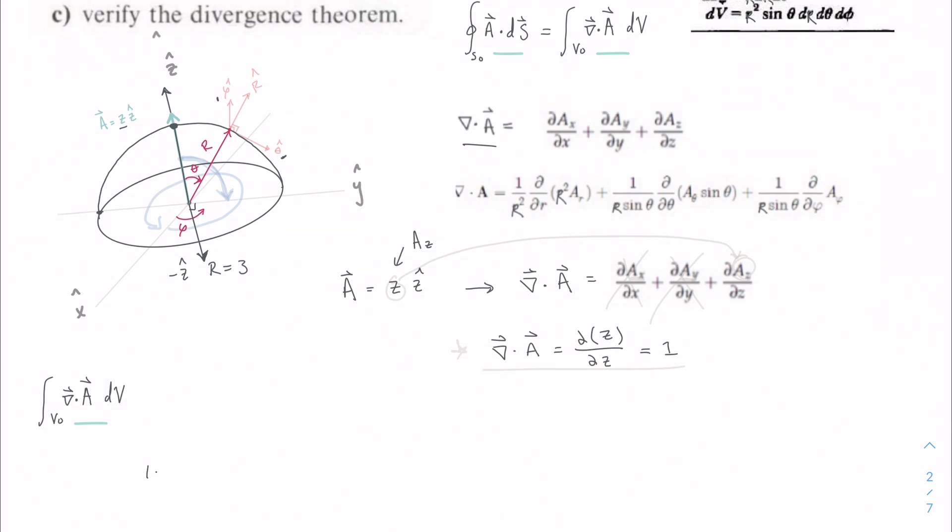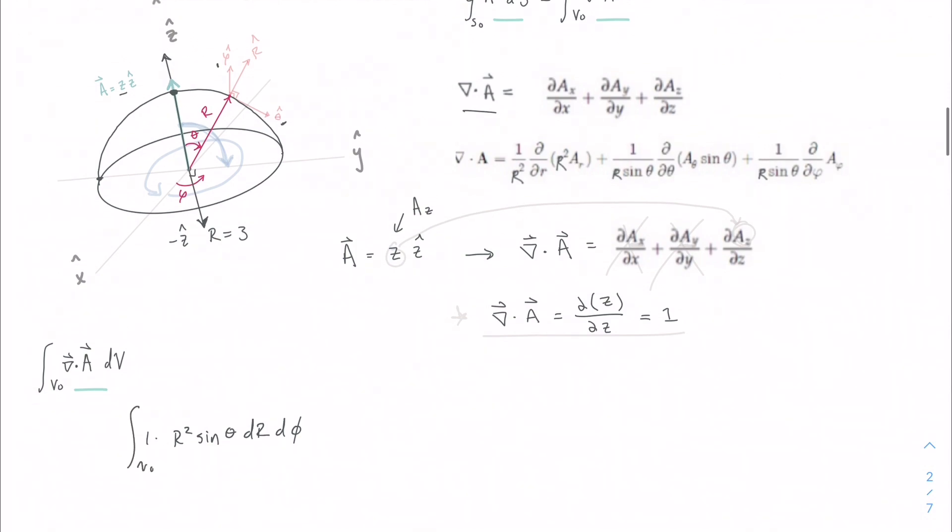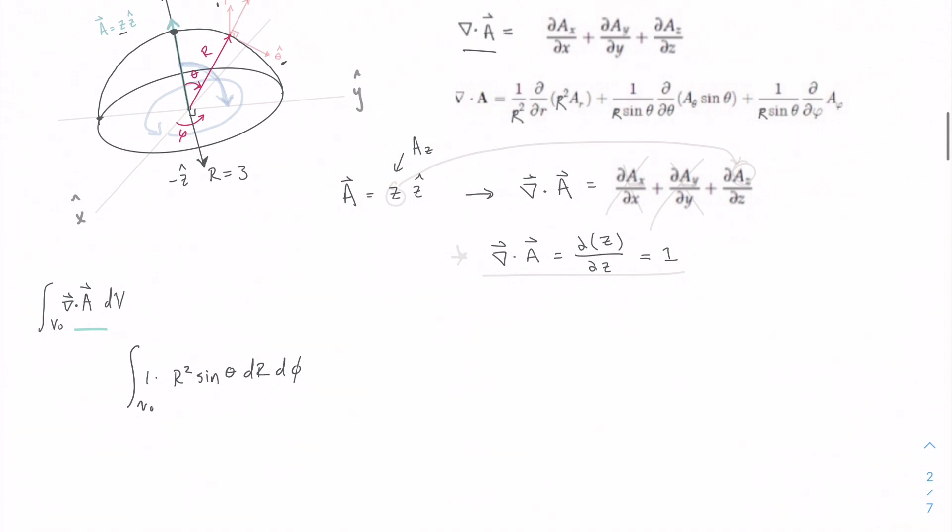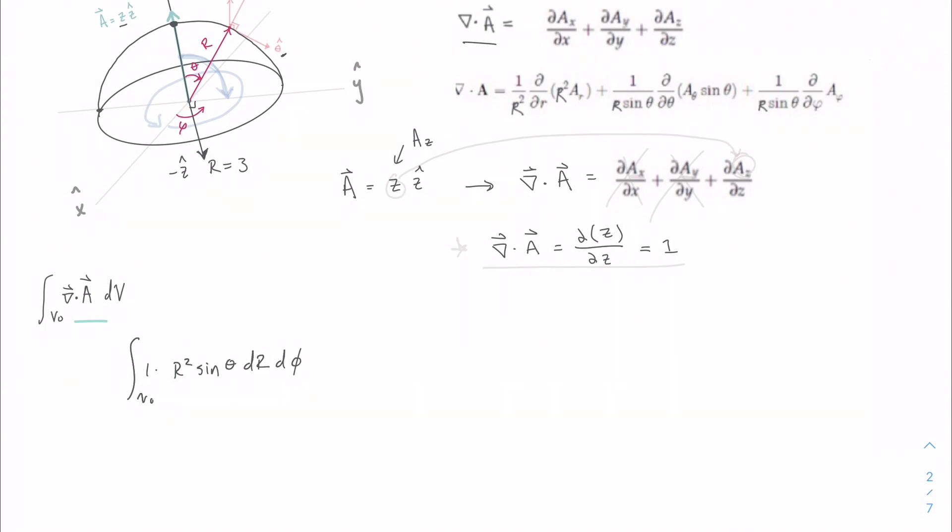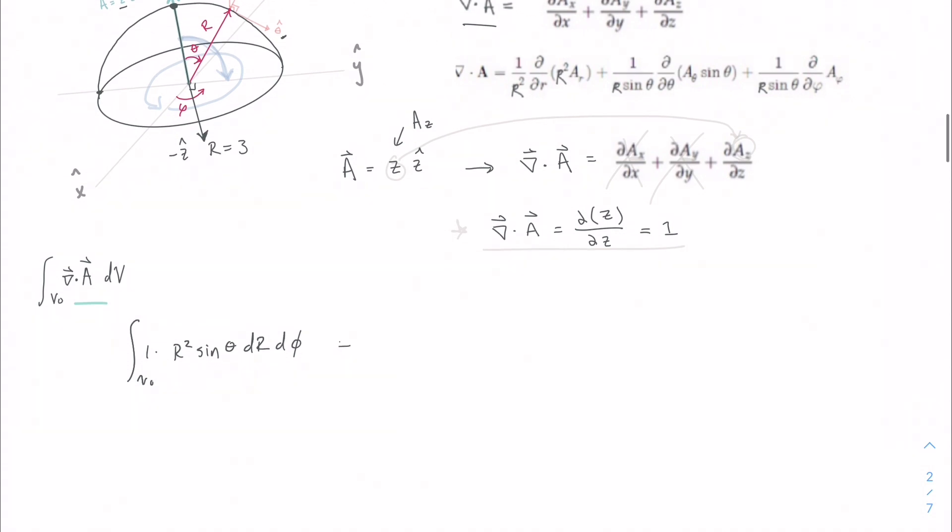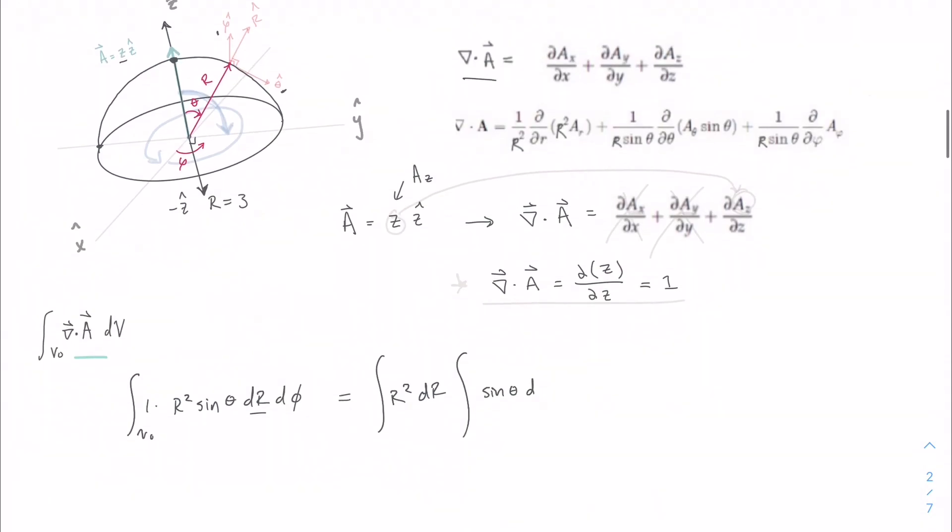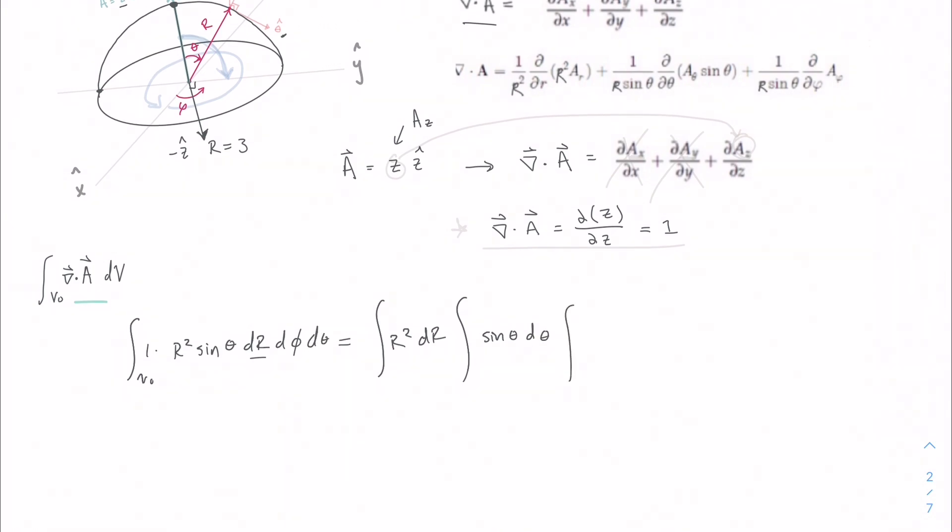So we have 1 multiplied by r squared sine of theta dr d phi. We're just going to fully solve out the entire thing. So we are going to break up our differential pieces. So we have an r squared dr, and then we have a sine of theta d theta, and then the integral of d phi. Let's find the bounds for each of these.